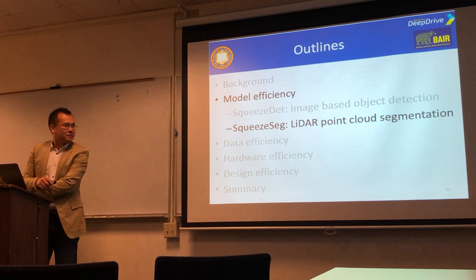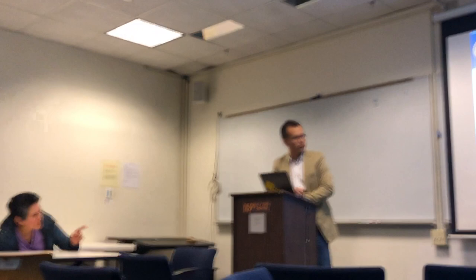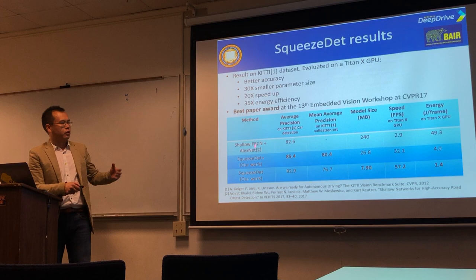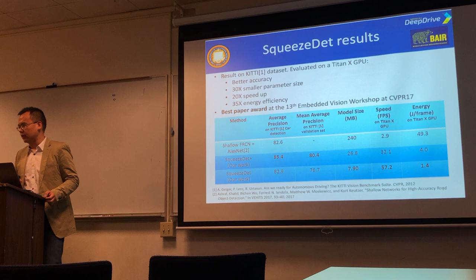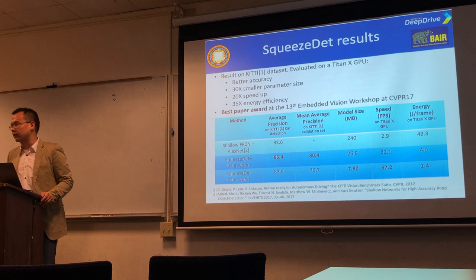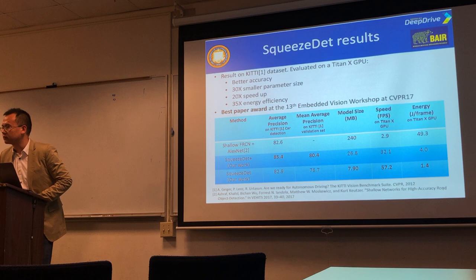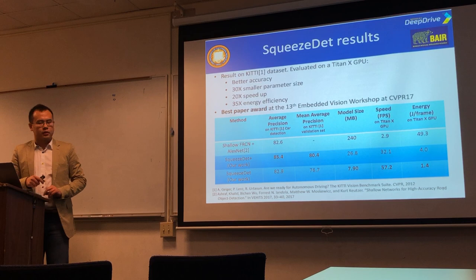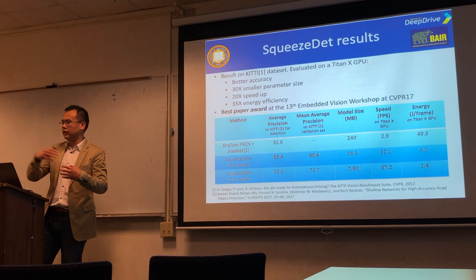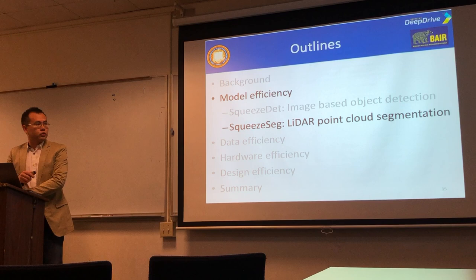Regarding what we're comparing against — this is compared to one of our previous works based on Fast RCNN, already optimized with a low-complexity network. The accuracy metric is averaged across easy, moderate, and hard settings on KITTI. At the time, this number was state-of-the-art — about two or three years ago. Now the state of the art is already better, maybe around 90-ish. Even though it was a reduced parameter model, it was among the best at the time.